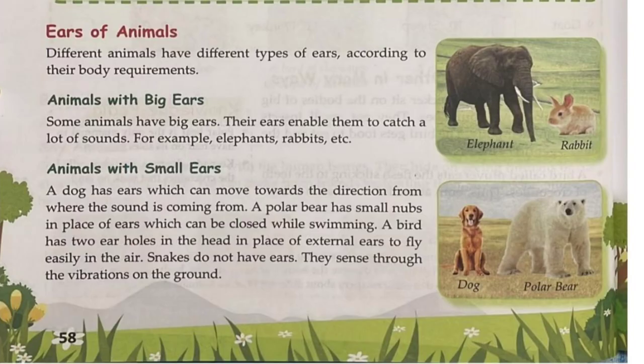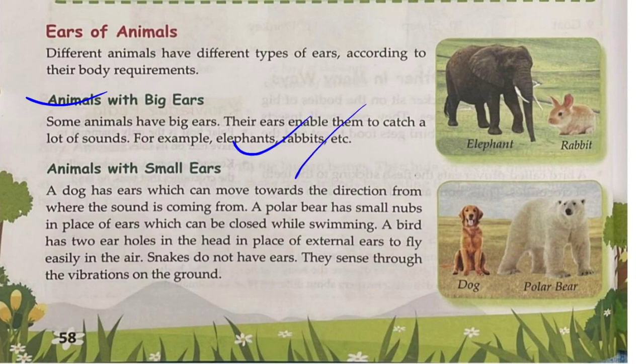Ears of animals: different animals have different types of ears, shaped according to their body requirements. Animals with big ears — some animals have very big ears which help them pick up many sounds. Examples include the elephant and rabbit.